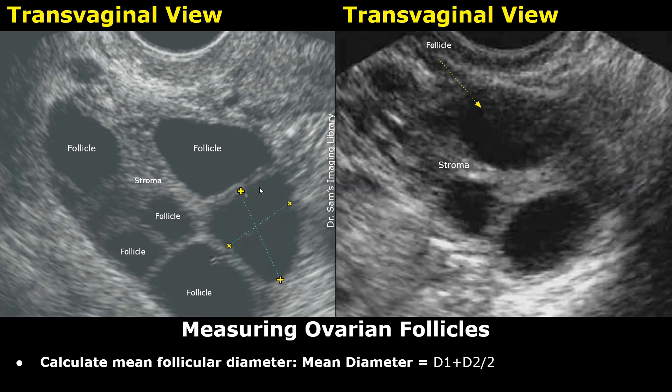Once we have D1 and D2, we calculate the mean follicular diameter. The formula is: mean follicular diameter = (D1 + D2) / 2. This mean value is the number used for clinical decision making, including ovulation timing, cycle monitoring, and fertility treatment planning.